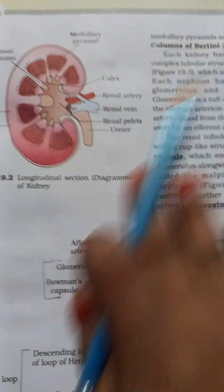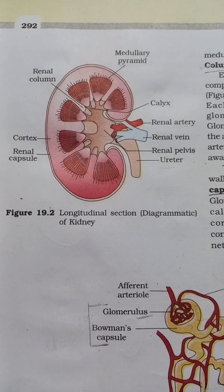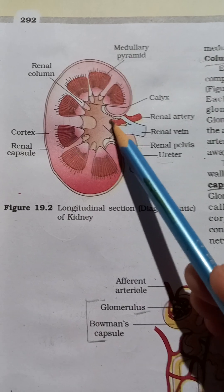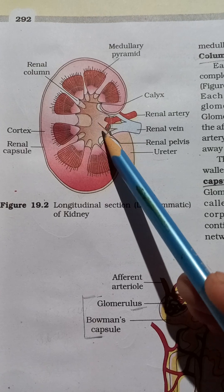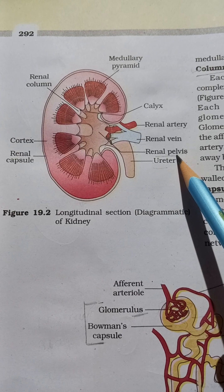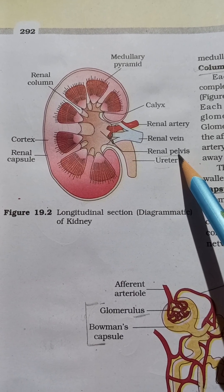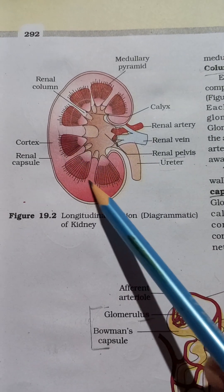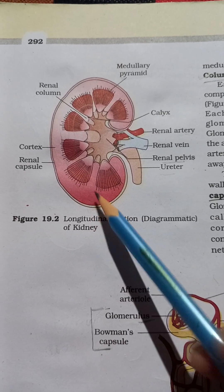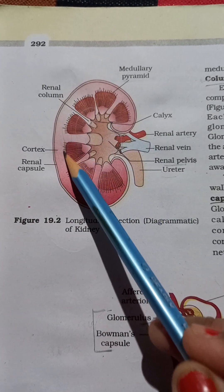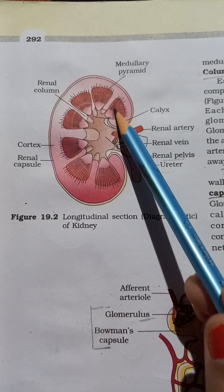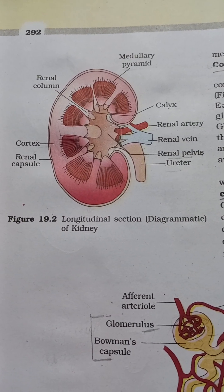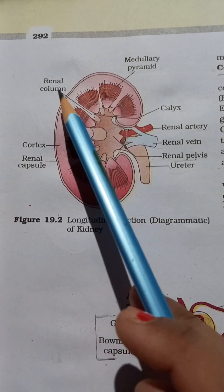Looking at the transverse section of the kidney, you can see the renal artery, and the empty central space is called the renal pelvis. The renal pelvis can be asked about in exams. The kidney is divided into two regions: the outer region is the renal cortex, and the inner region is the renal medulla, which is further divided into inner medulla and outer medulla.